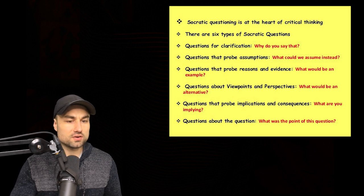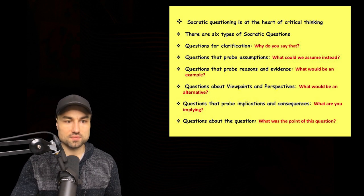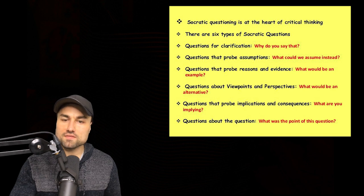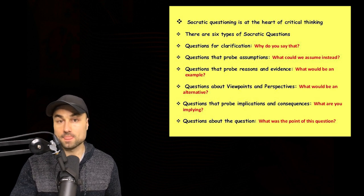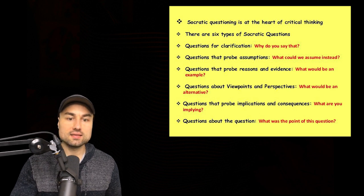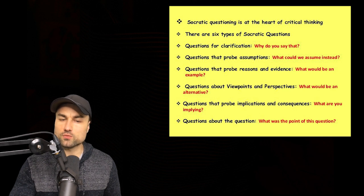Number four, considering alternative perspectives. What might others think? How do I know I'm correct? Number five, examining consequences and implications. What if I'm wrong? What are the consequences if I am? Number six, questioning the original questions. Why did I think that? Was I correct? What conclusions can I draw from the reasoning process?